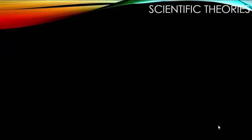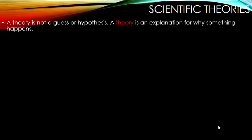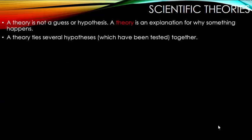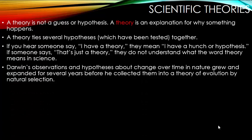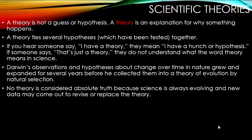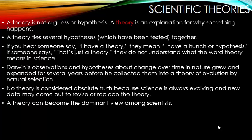Scientific theories. A lot of people misunderstand what a theory is. A theory is not a guess or a hypothesis — it is an explanation for why something happens, and it ties several tested hypotheses together. If you hear someone say 'I have a theory,' they mean they have a hunch or hypothesis. If someone says 'that's just a theory,' they do not understand what the word theory means in science. Darwin's observations and hypotheses about change over time in nature grew for several years before he collected them into a theory of evolution by natural selection. No theory is considered absolute truth because science is always evolving, and new data may revise or replace a theory.